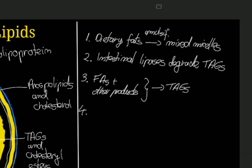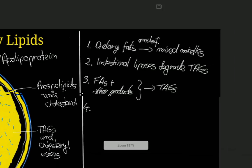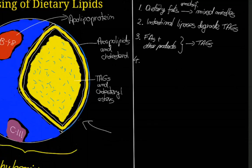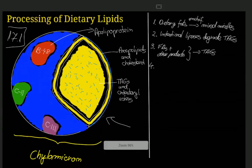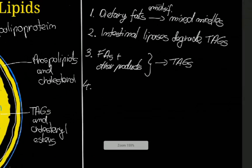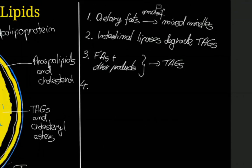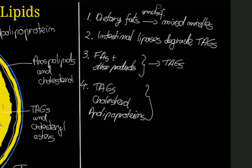Triglycerides, then cholesterol and apolipoproteins, are packaged into these aggregate structures called chylomicrons, which I've drawn here at the left. This is a chylomicron, so in step 4 triglycerides, cholesterol, and apolipoproteins are packaged into chylomicrons.